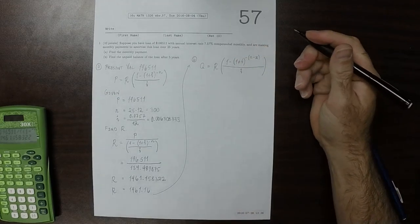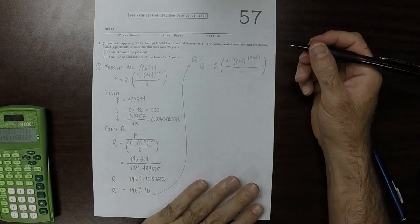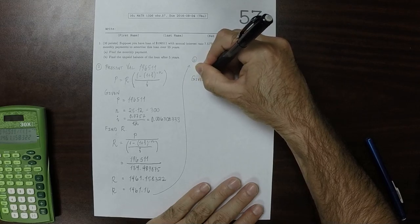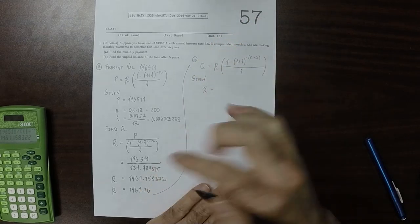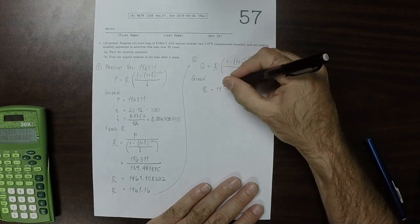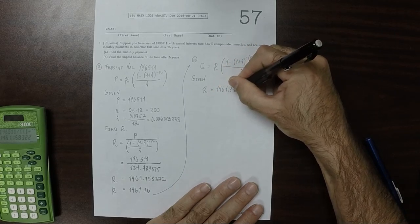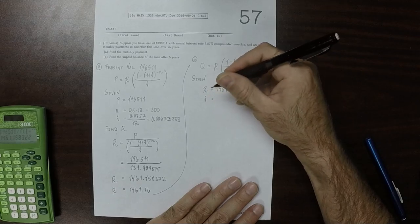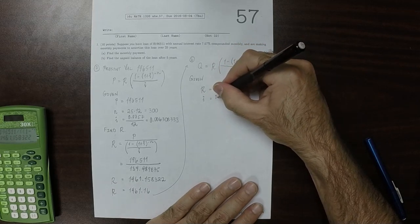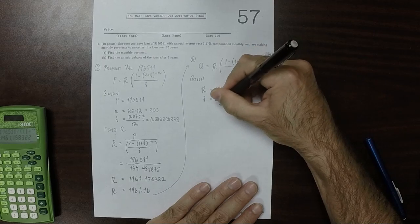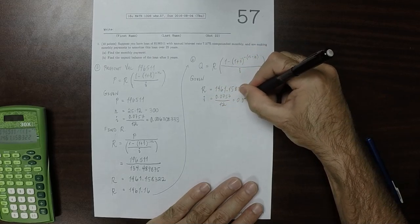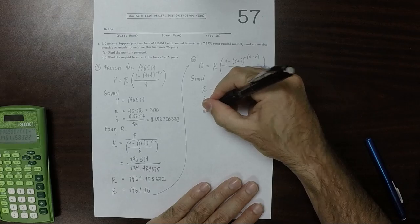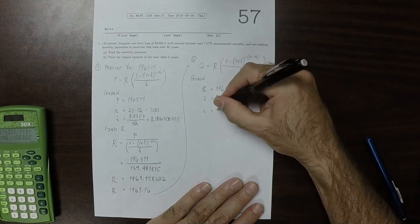We're given that R is this value from Part A, so 1461.158322. i is the same as before, 0.0757 over 12, which is 0.006308333. And n is the same as before, 300.